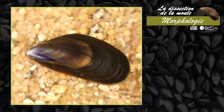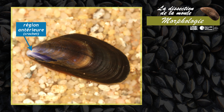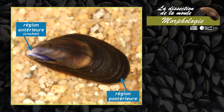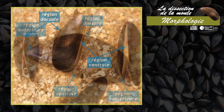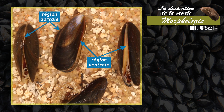Chaque valve présente une région antérieure effilée, le crochet, et une région postérieure plus arrondie. En plus de cette organisation antéro-postérieure, on distingue une région dorsale, une région ventrale, une valve droite et une valve gauche.